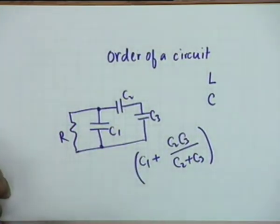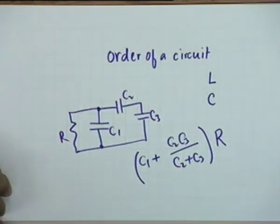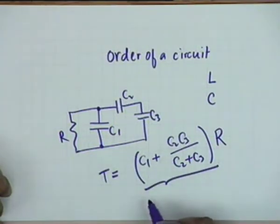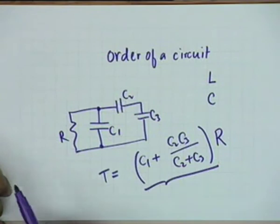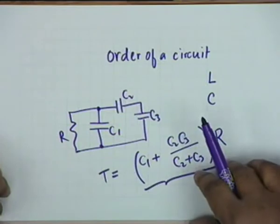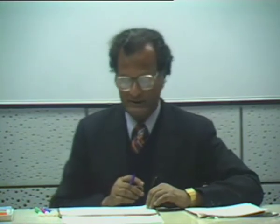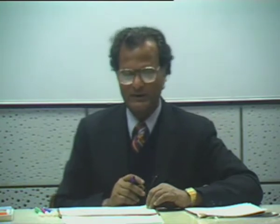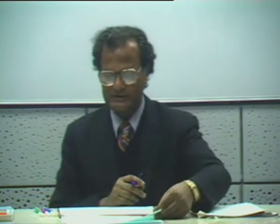The equivalent capacitance would be C1 plus C2C3 divided by C2 plus C3, connected across resistance R. This behaves as a first order circuit with an effective time constant equal to this total effective capacitance multiplied by the effective resistance. Similarly, there may be more than one resistor but effectively they behave like one resistor. A resistance-inductance circuit will also be a first order circuit.